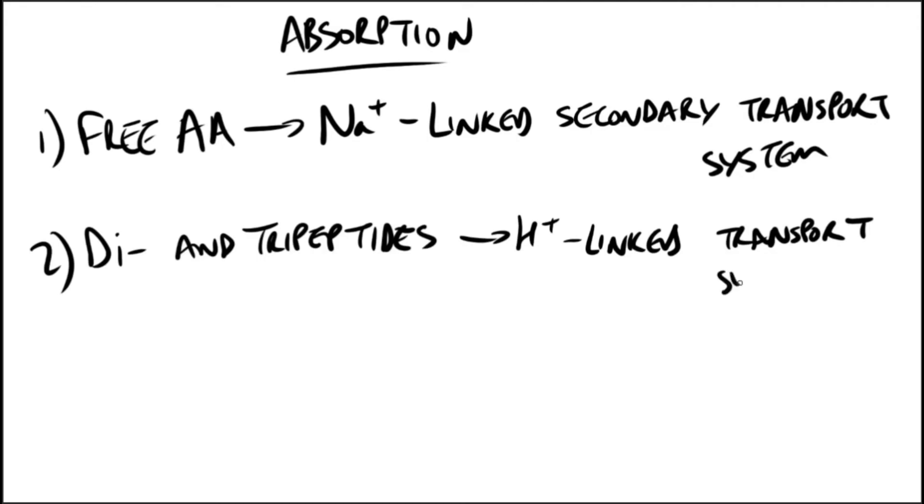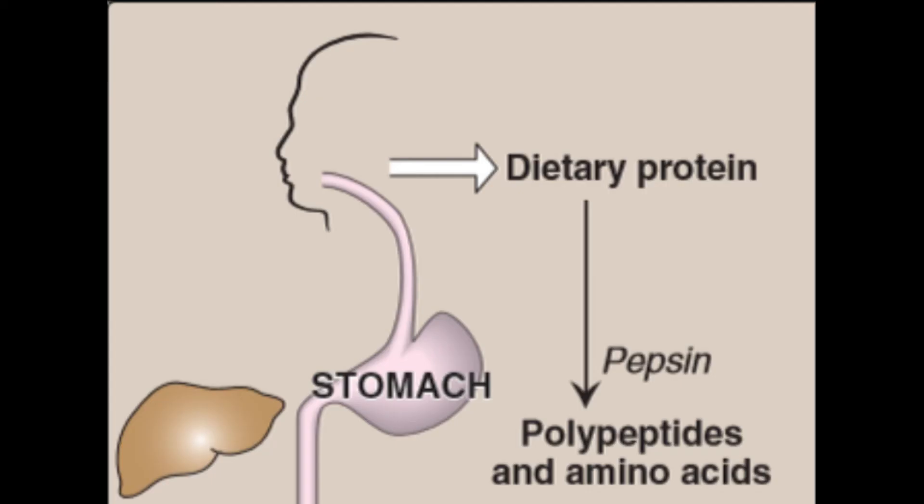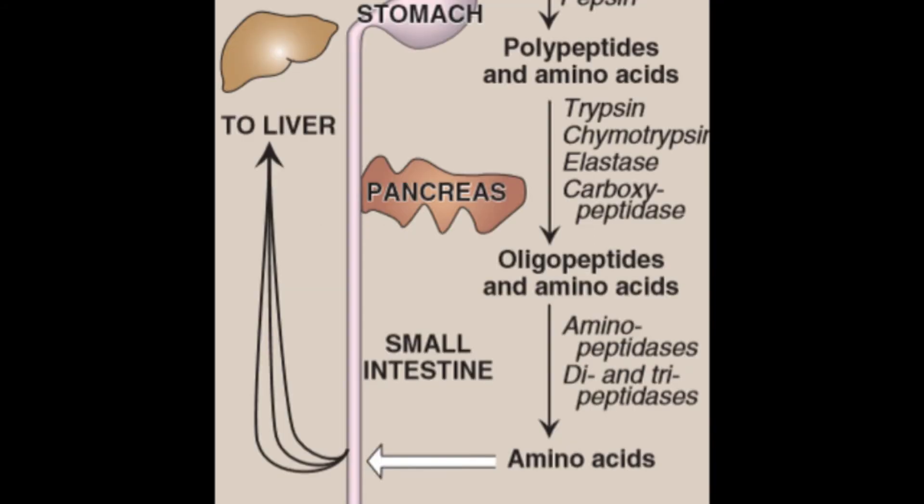Okay, a review. The dietary protein goes into the stomach where pepsin acts on the protein, producing polypeptides and amino acids. Then we go to the jejunum where the pancreatic enzymes, which we said were chymotrypsin, elastase, carboxypeptidase, and trypsin itself, act.